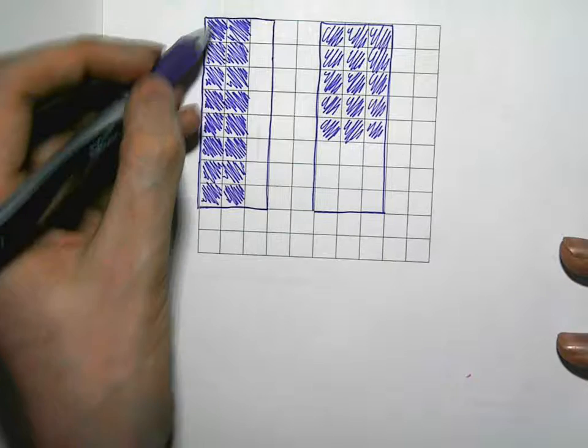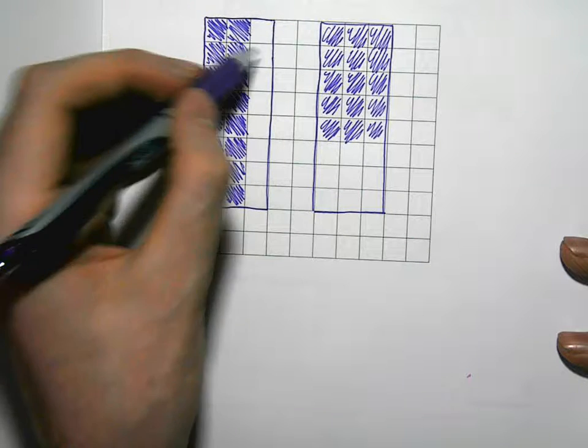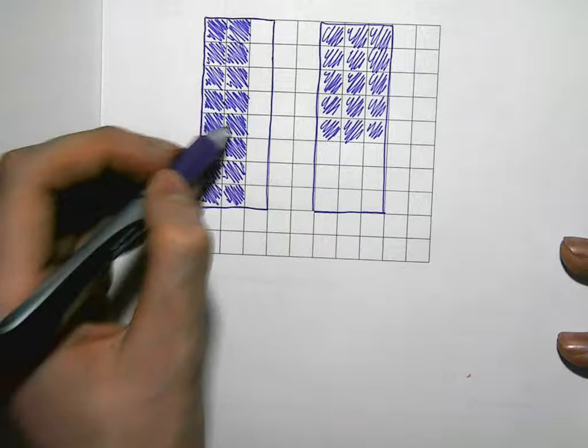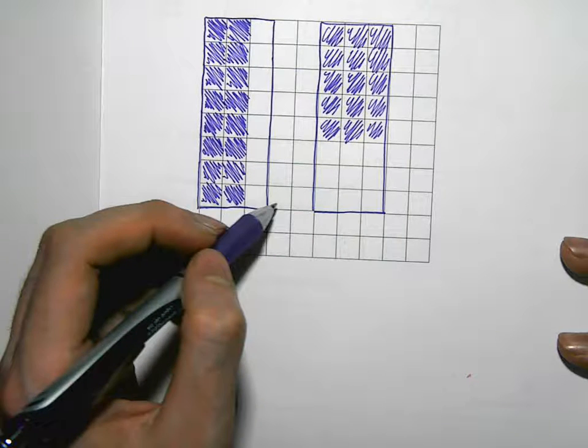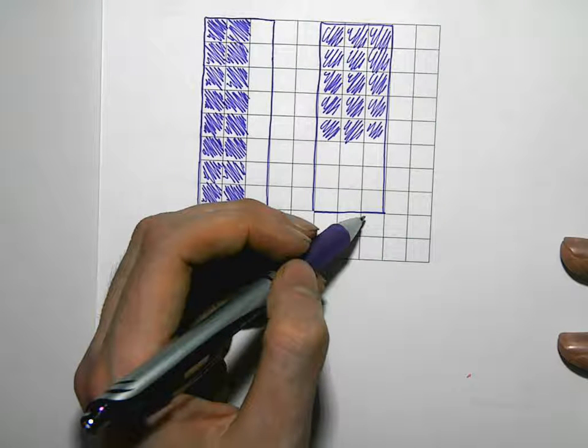So now we can compare these two. So we've got the same amount of squares here. We've got 1, 2, 3, 4, 5, 6, 7, 8, 9, 10, 11, 12, 13, 14, 15, 16, 17, 18, 19, 20, 21, 22, 23, 24. So we've got 24 squares in both of them.